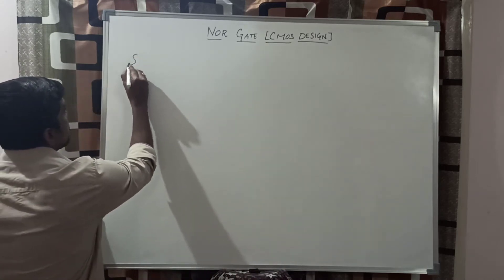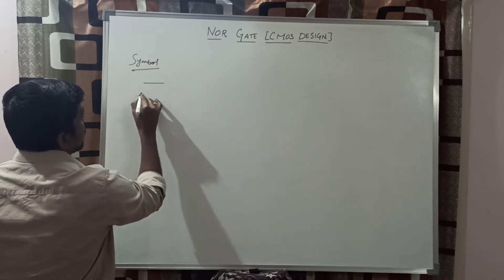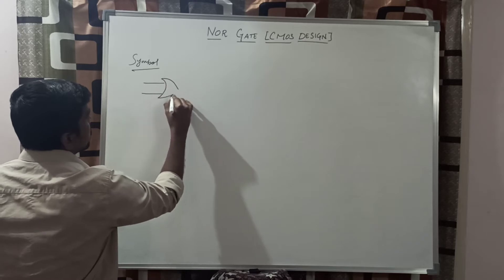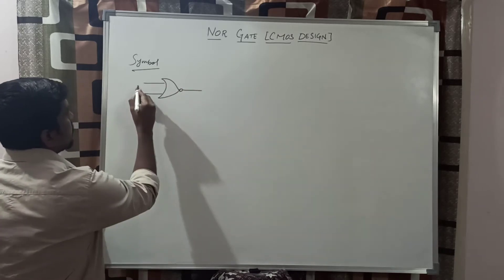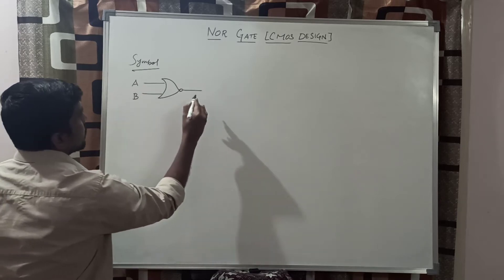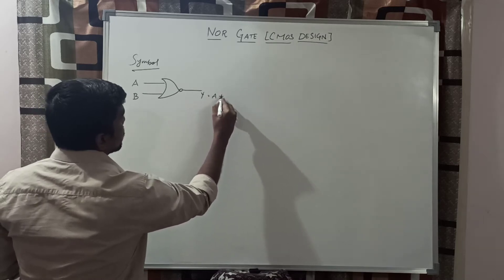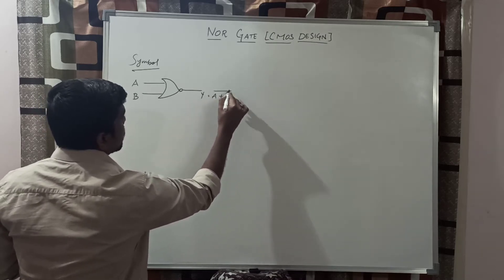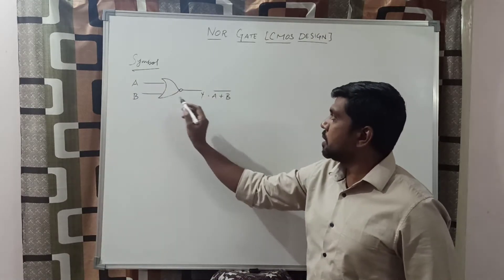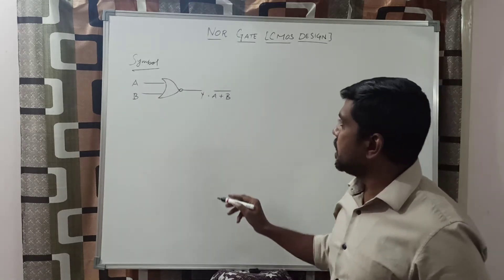First, you draw the symbol of NOR gate. In this NOR gate, this is the symbol. Here we are applying two inputs, A and B, and the output is Y. The equation is A plus B, the whole bar. You can use the two inputs A and B, and the final result is Y. The corresponding equation is A plus B, the whole bar.